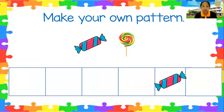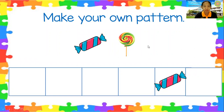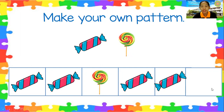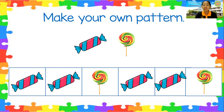Next one is candy and lollipop. Now let's make the pattern: candy, candy, candy, lollipop, candy, and candy. What is the next pattern? It's lollipop. Very good.